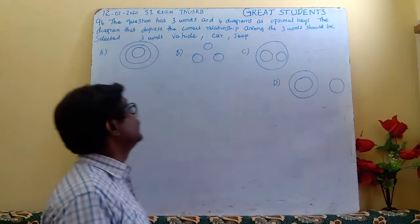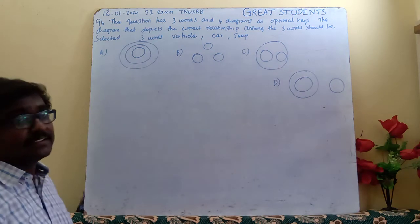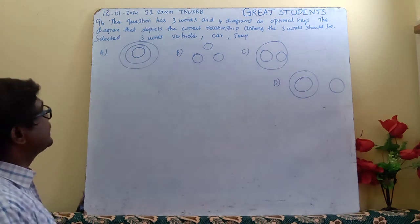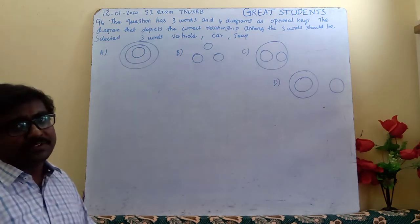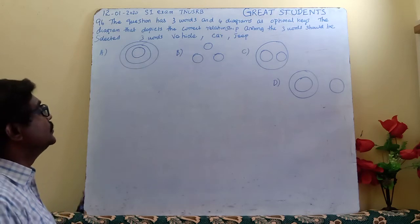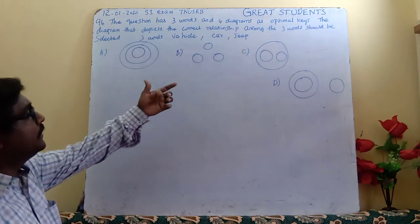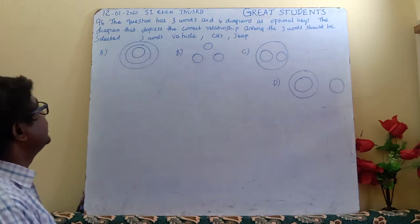Welcome to Great Students. For question number 96, part of the essay exam, the question has three words and four diagrams as optional keys. So the three words and four diagrams match one. The diagram depicts the correct relationship among the three words, which should be selected.